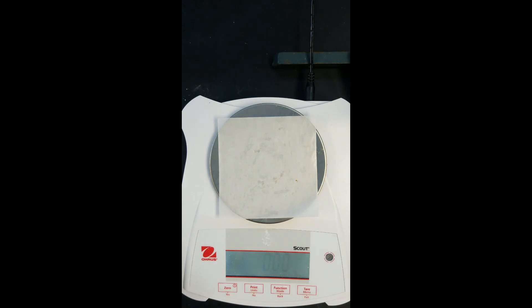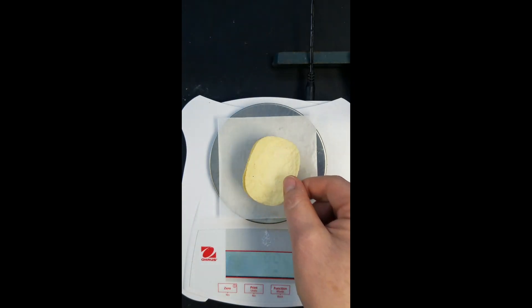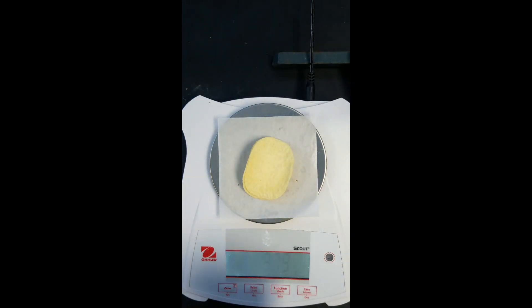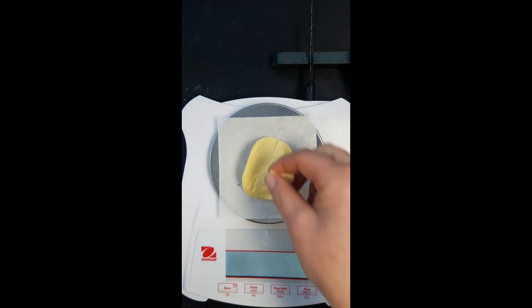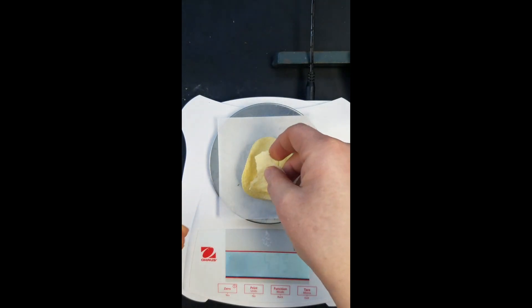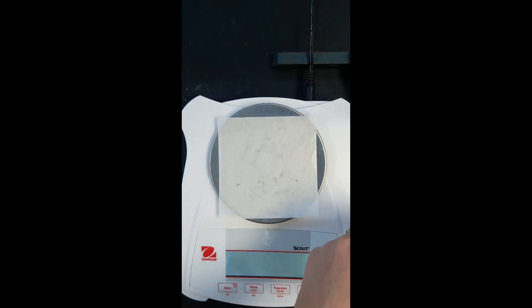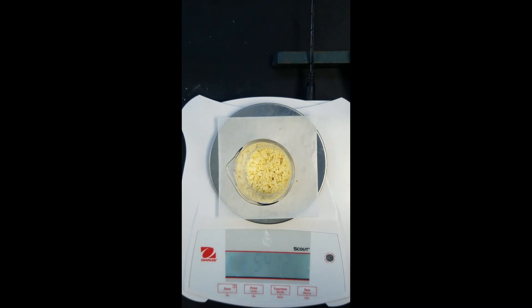Again, we're going to weigh out about 5 grams. We're going to add some chips and add them into our beaker to crush up. Here is our beaker with our crushed Pringles in it.